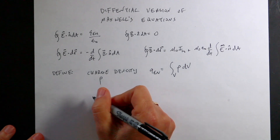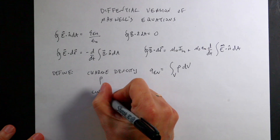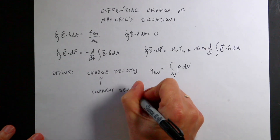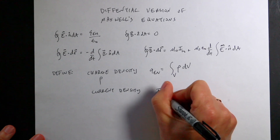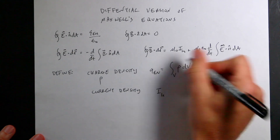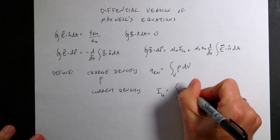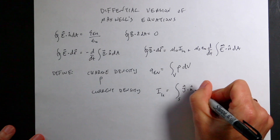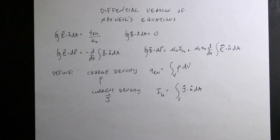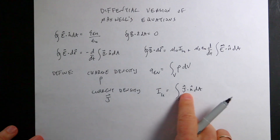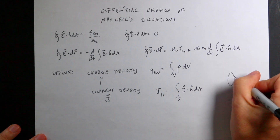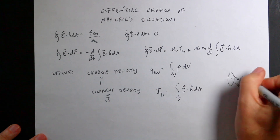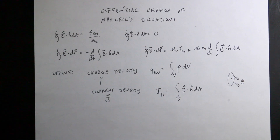The other thing to define is the current density J. The total current passing through some surface is I equals the surface integral of J dot N-hat dA, where J is the current density. It's like a flux — the total current flux through a surface gives you the current. The J dot N-hat term matters because only the component of current density perpendicular to the surface contributes.